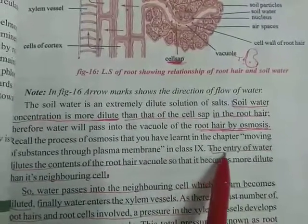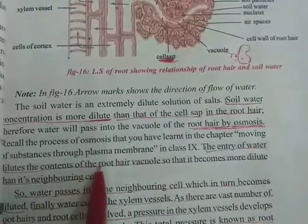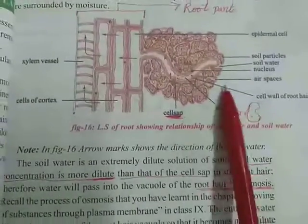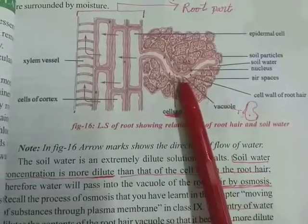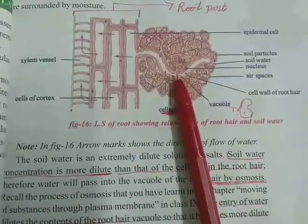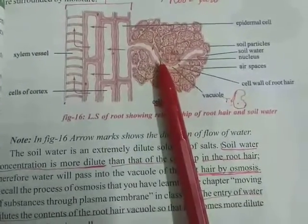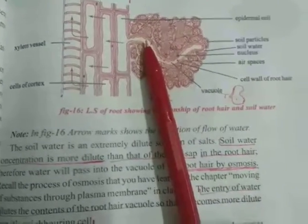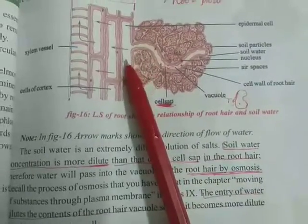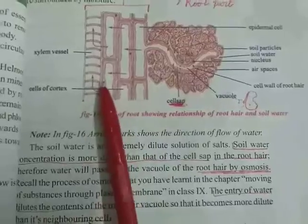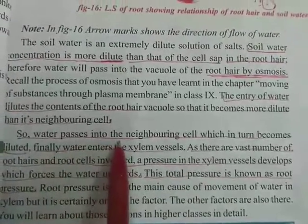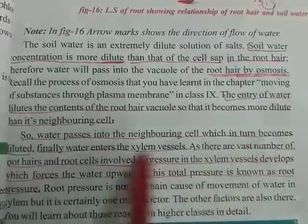The entry of water dilutes the concentration of the root hair vacuoles so that it becomes more dilute than its neighboring cells. Whenever diluted water enters into the root hair, the neighboring cells also become diluted, and then these cells transfer water and minerals to their neighboring cells. In this manner, water and minerals simply spread from one place to another in a root or in a plant body.